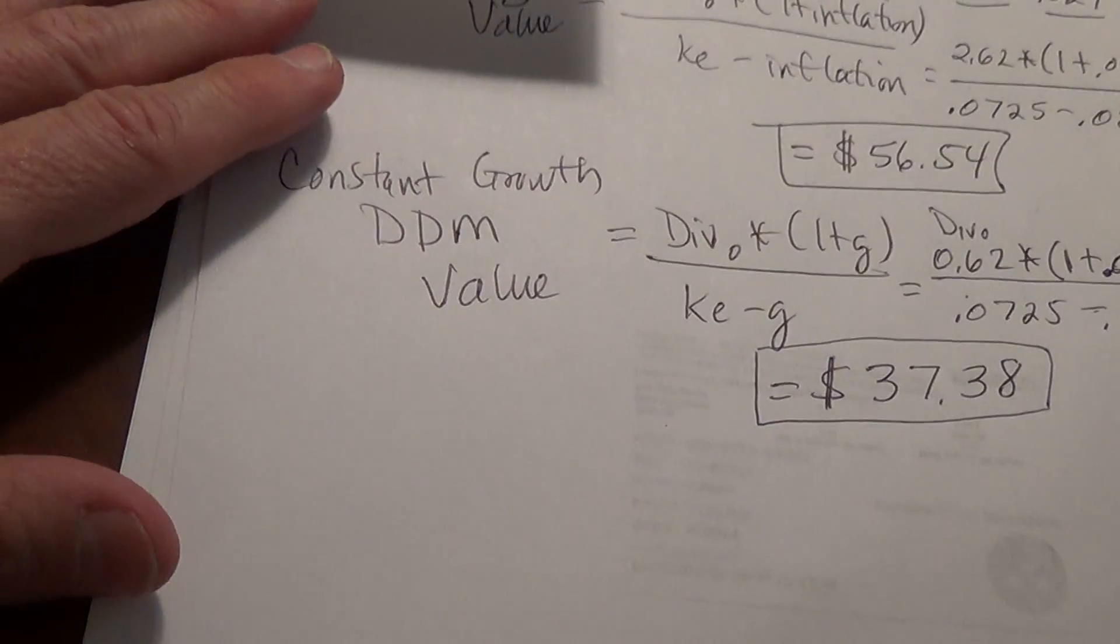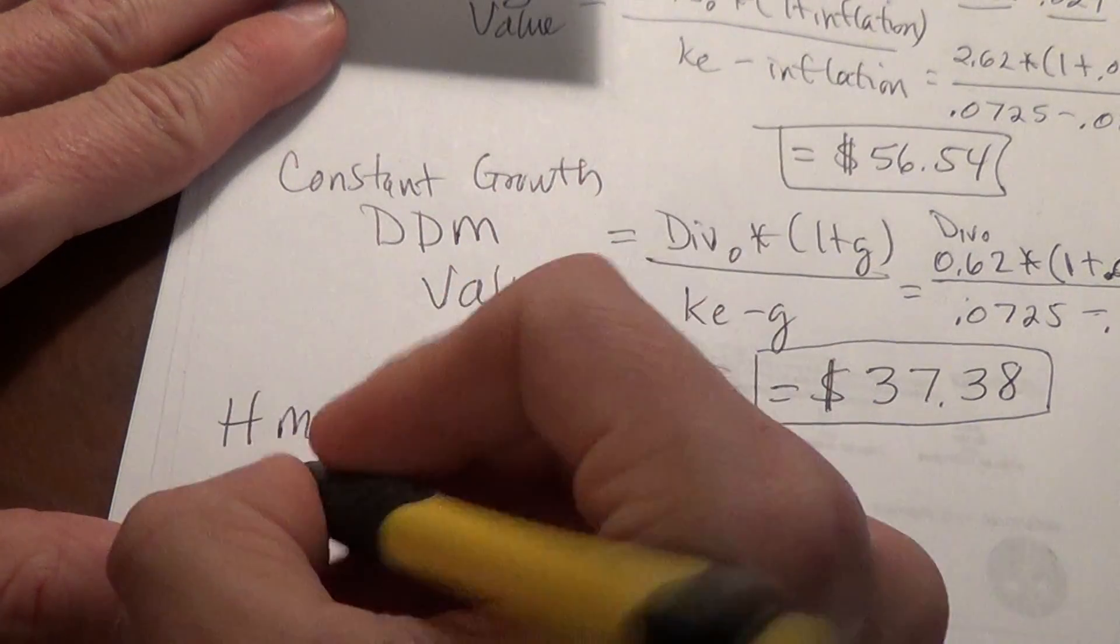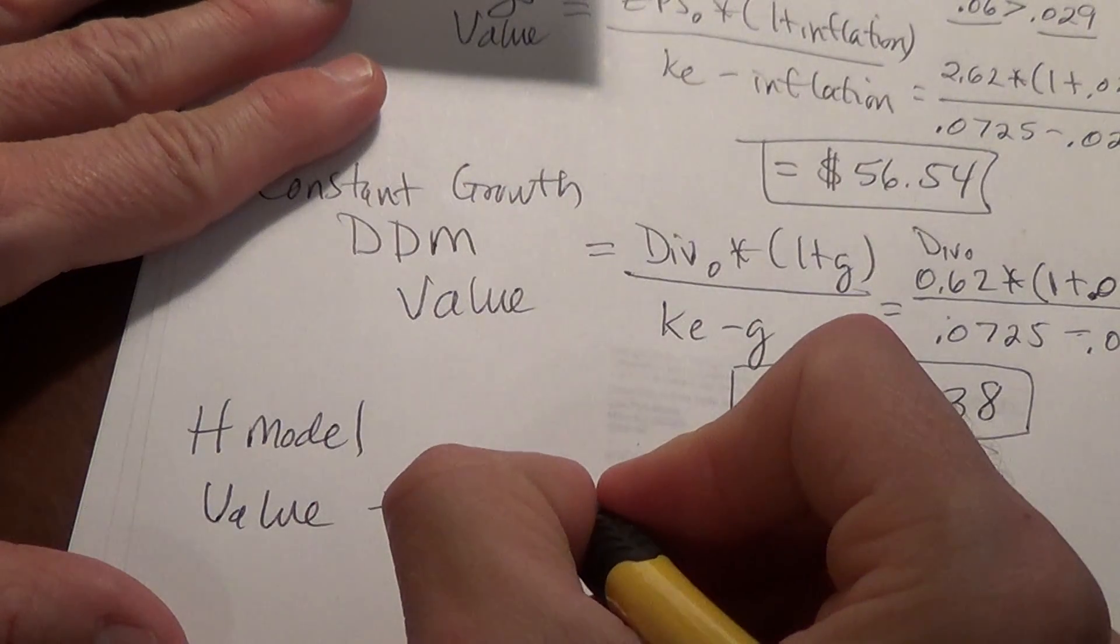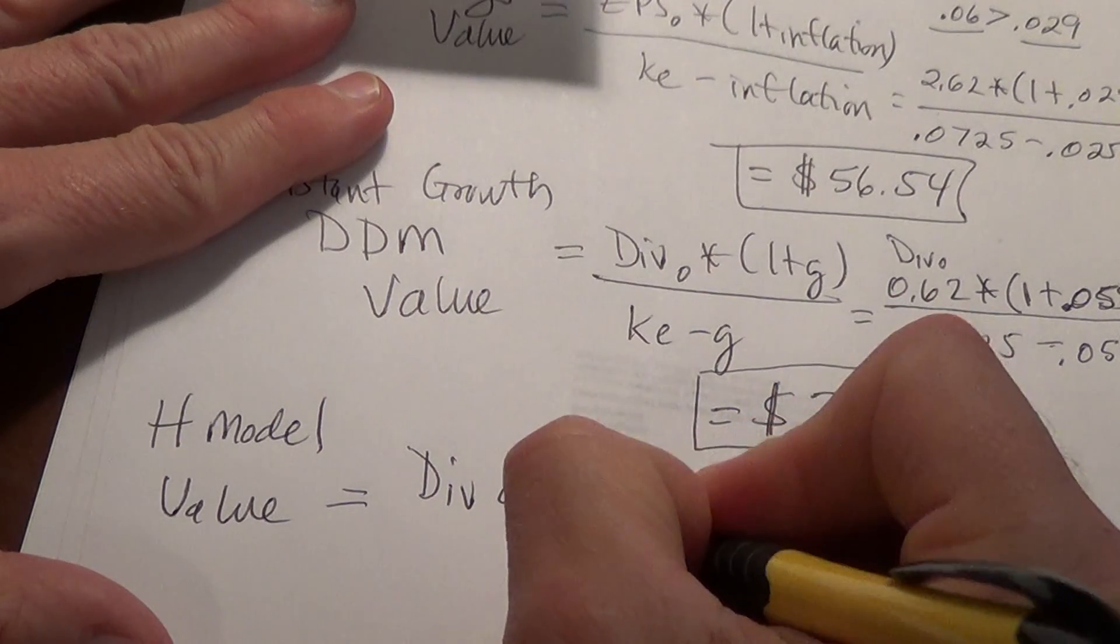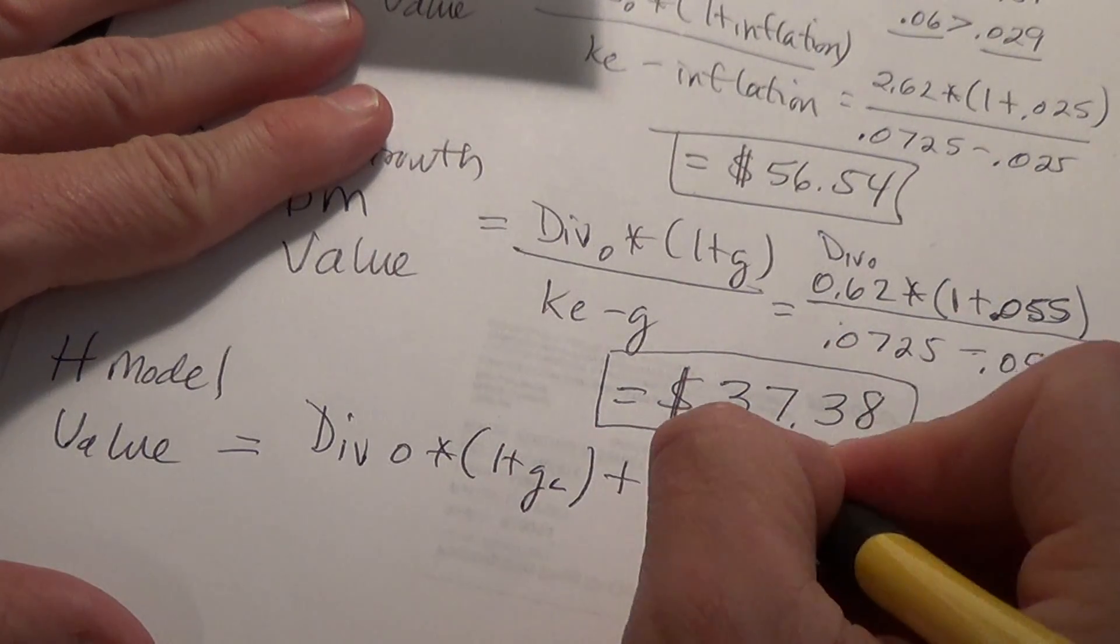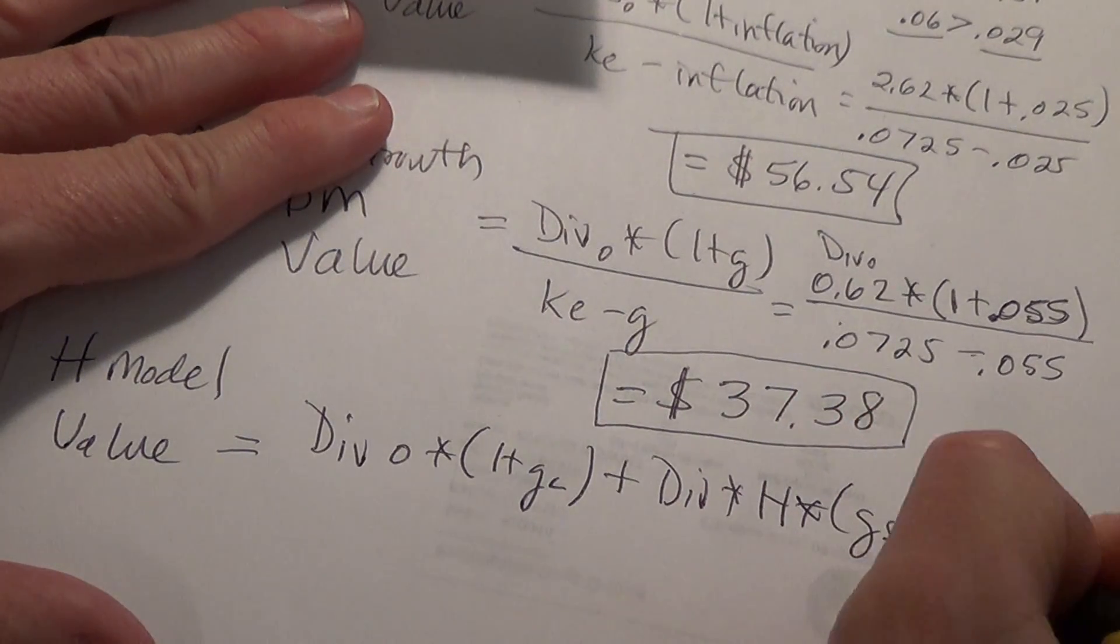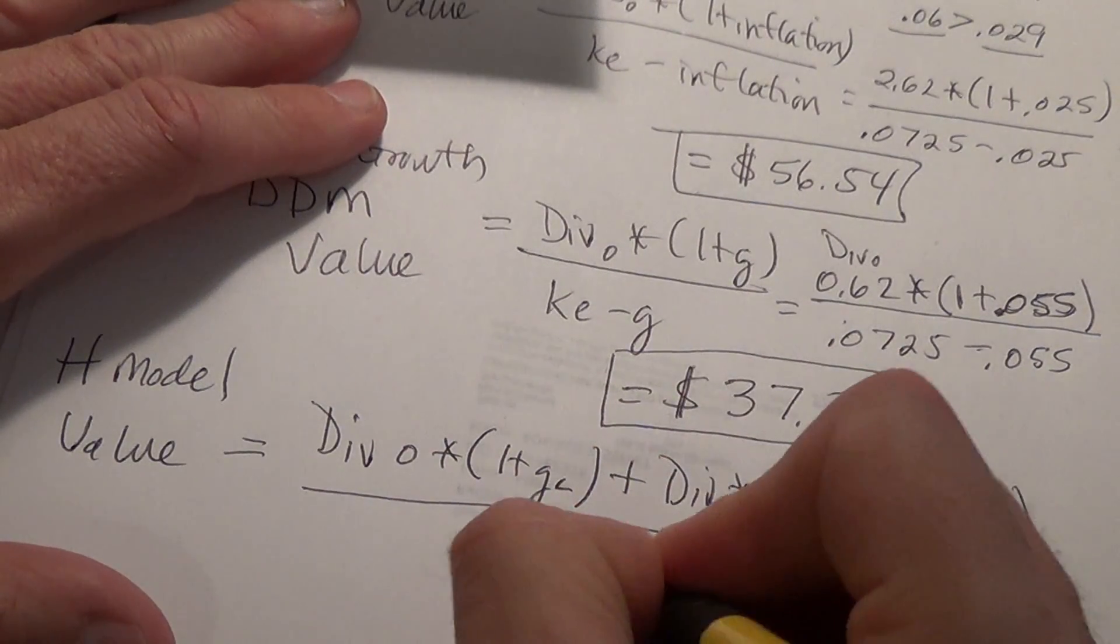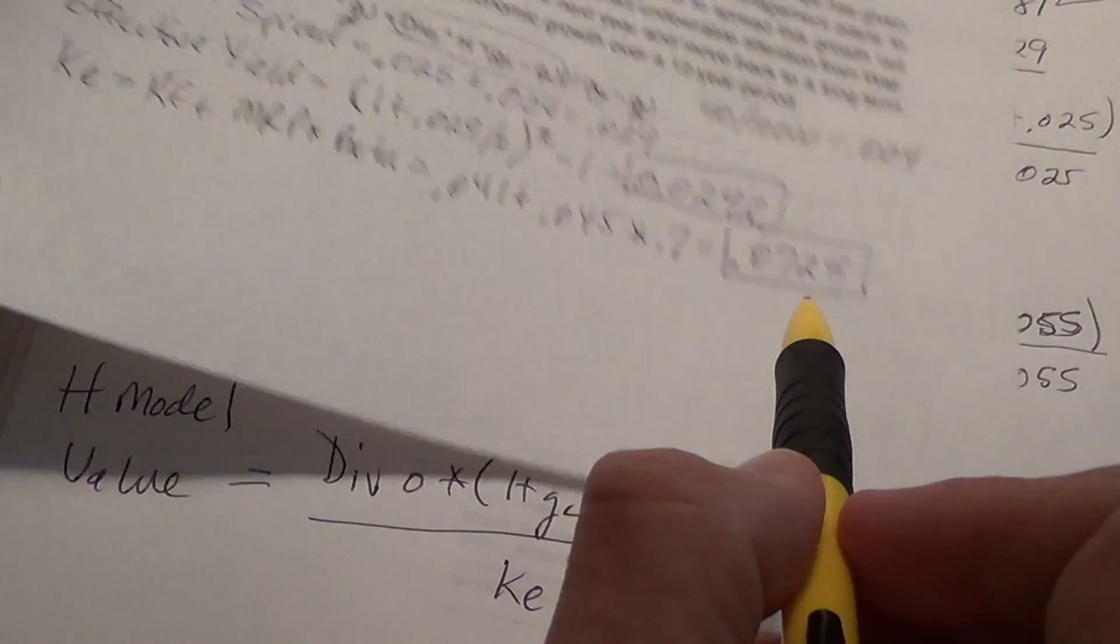And then the last model, the one that's the longest one, but it's really not that bad, and that's the H model. The value for the H model is dividend 0 times 1 plus the long term growth rate plus dividend 0 times our H times our short term growth rate minus our long term growth rate, and we divide that all by KE minus G. And again, that entire formula is given right here in the formula hint.